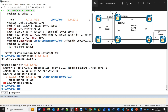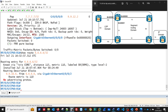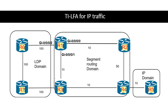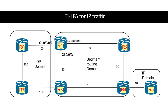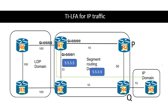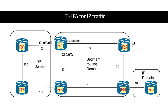Now let's check TI-LFA for IP protection. In this topology, R5 is acting as a plain IPv4 device. The primary path is R1, R3, R4, R5. The backup path again uses R2 and R4 as P and Q nodes respectively. On the backup path, the packet for R5 will have the adjacency SID between R2 and R4 pushed on top, and then implicit null label for R2. R2 removes the adjacency SID and forwards the packet to R4.